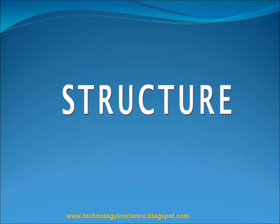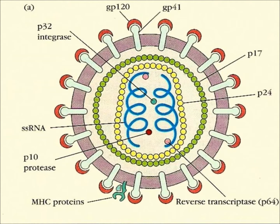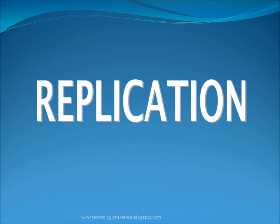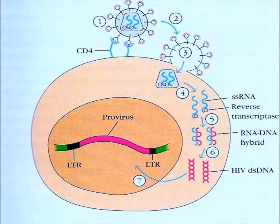Structure of HIV. Steps in the HIV replication cycle: the first step is fusion of the HIV cell to the host cell surface.